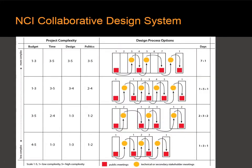This diagram shows on the left-hand side the level of project complexity. From your complexity analysis — in particular the budget, time, design, and politics — the more complex the project, the more days you need continuously. That's NCI's position: particularly with political and design complexity, it's best to stay with the project in place and complete those three feedback loops in place without going away.